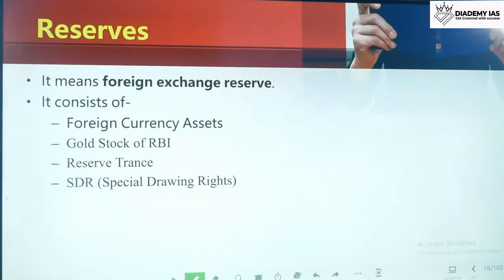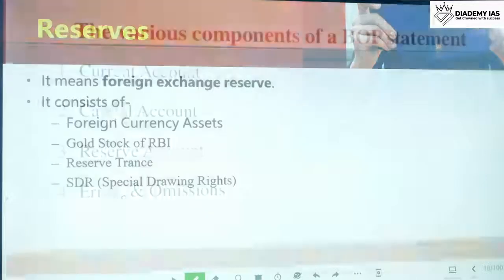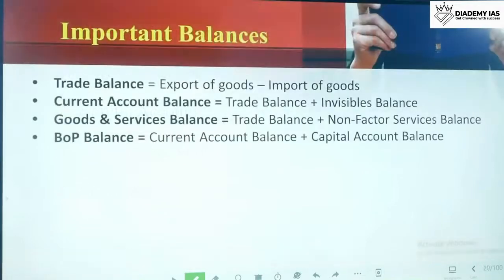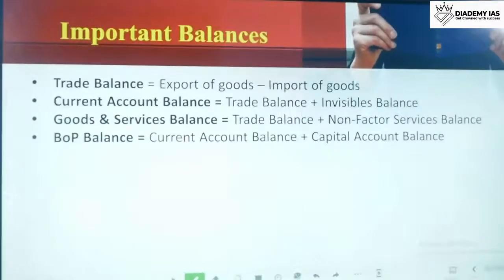Reserves means foreign exchange reserves, consisting of four items: first, foreign currency assets; second, gold stock of RBI; third, reserve tranche; and fourth, special drawing rights. So the BOP statement has four components: current account, capital account, reserve account, and errors and omissions. I hope the BOP statement is now very clear.